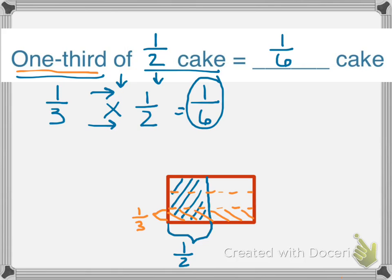So again, how many boxes have been shaded twice? Only one of our boxes out of one, two, three, four, five, six, have been shaded twice. So one third of a half a cake is one sixth, which matches our answer from before.